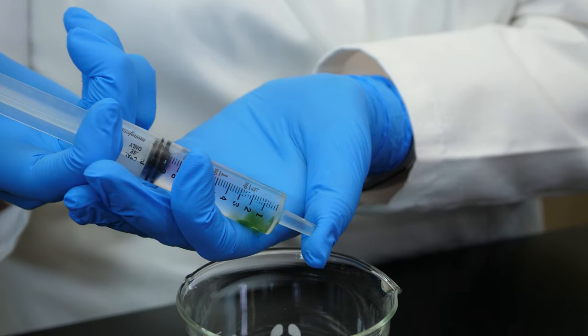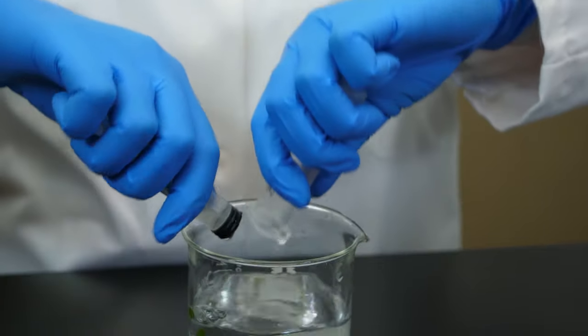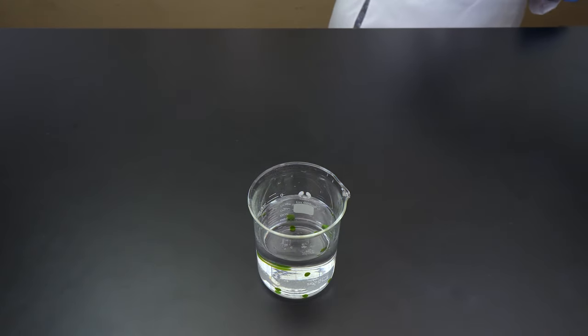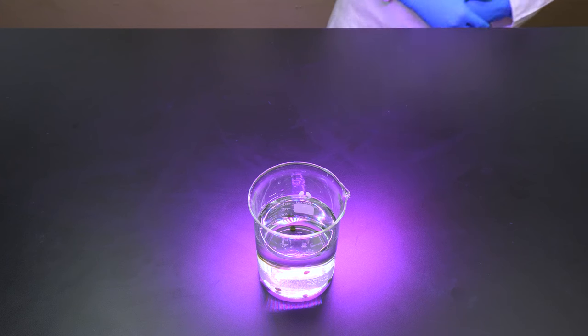This group will become our test group. We place our test group under a set of lamps. The light from the lamps should promote photosynthesis in the chads.